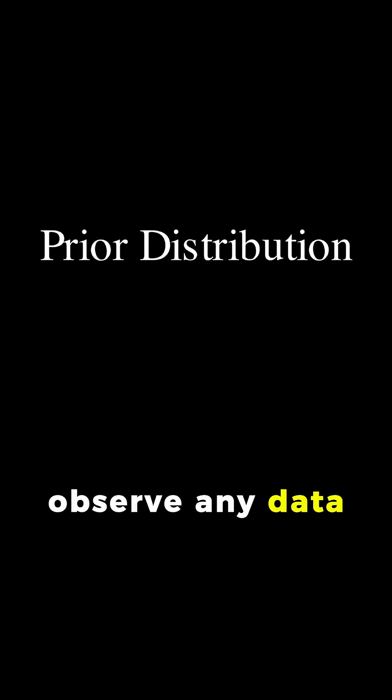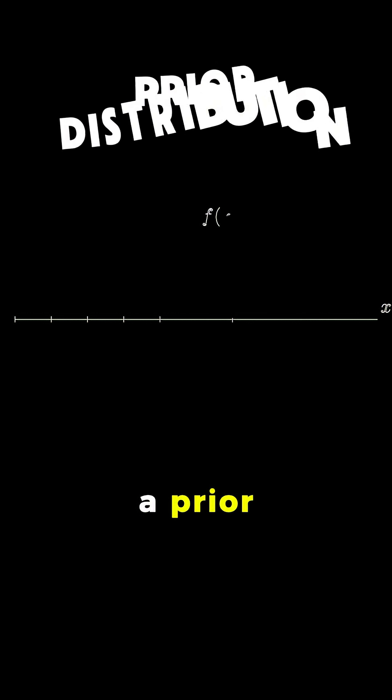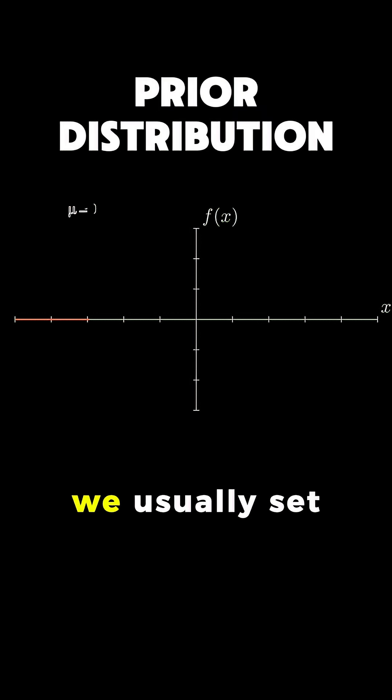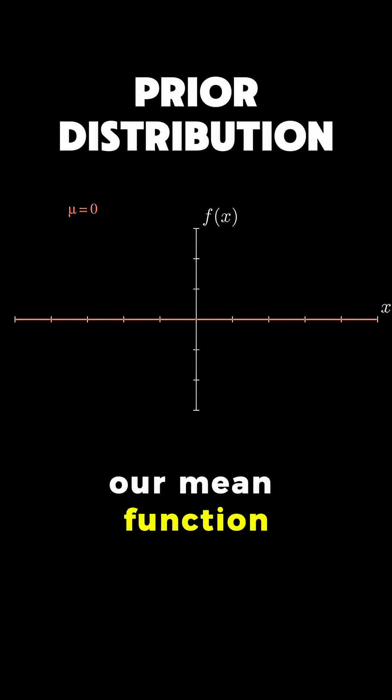So, before we observe any data, we start with what we call a prior. For simplicity, we usually set our mean function to zero, that's this red line here.